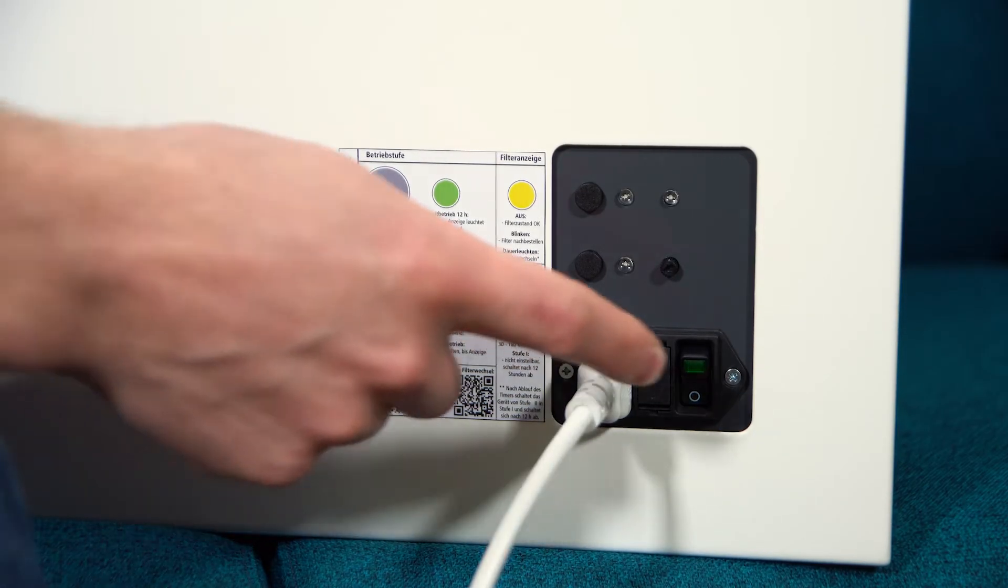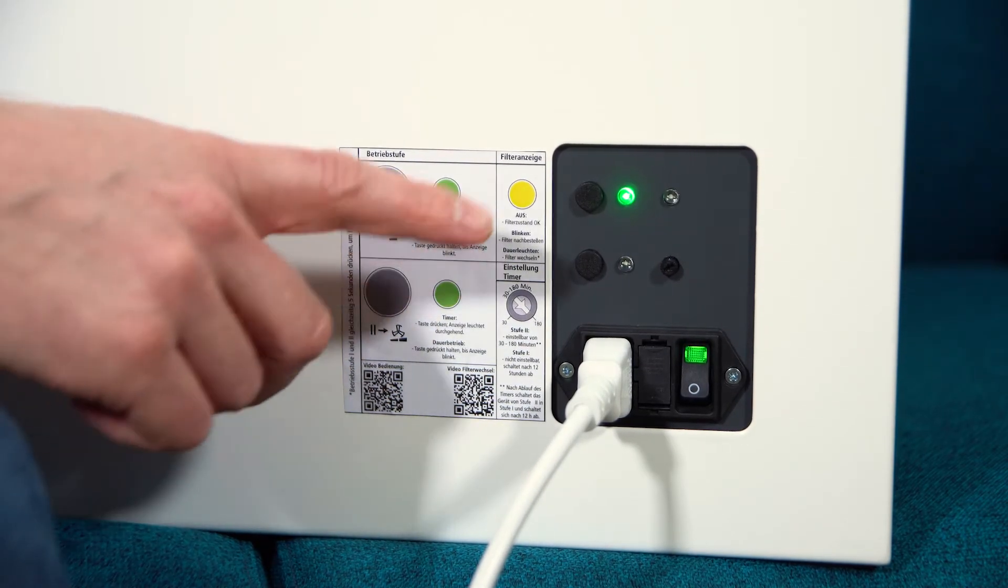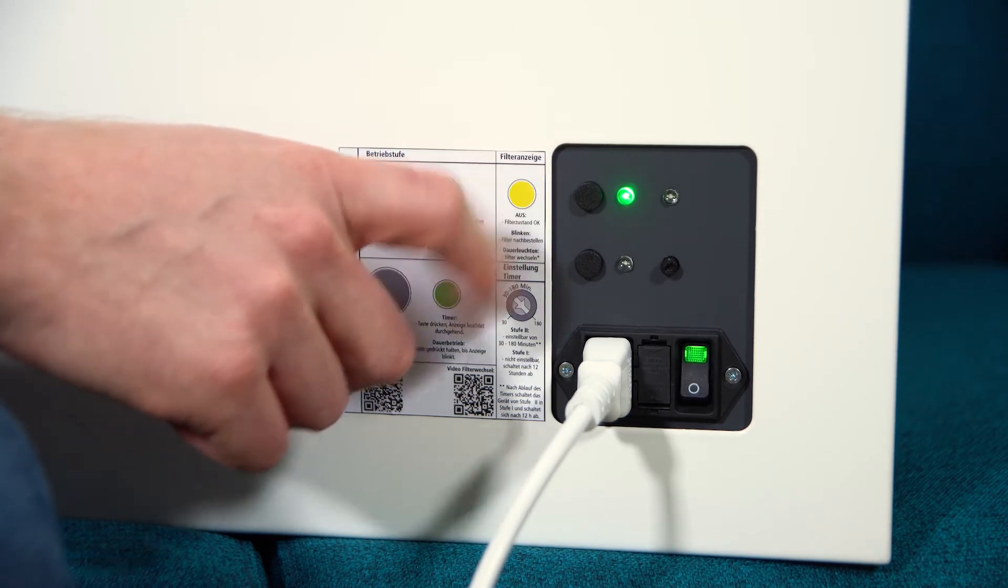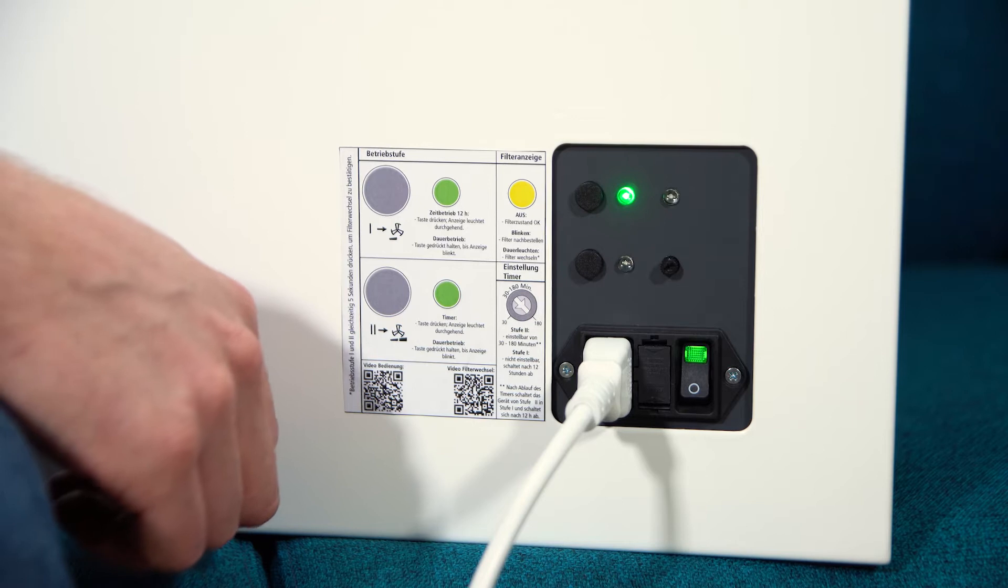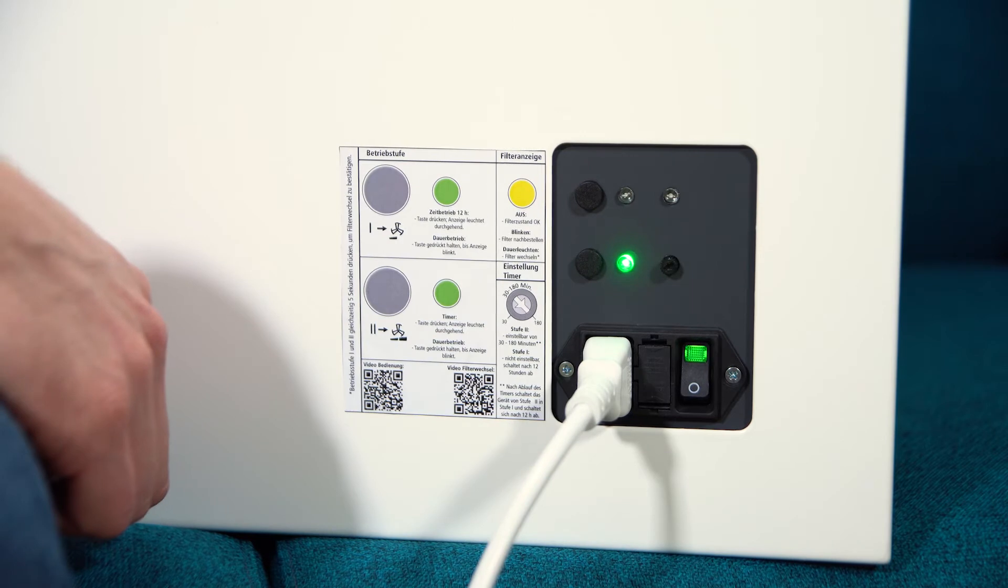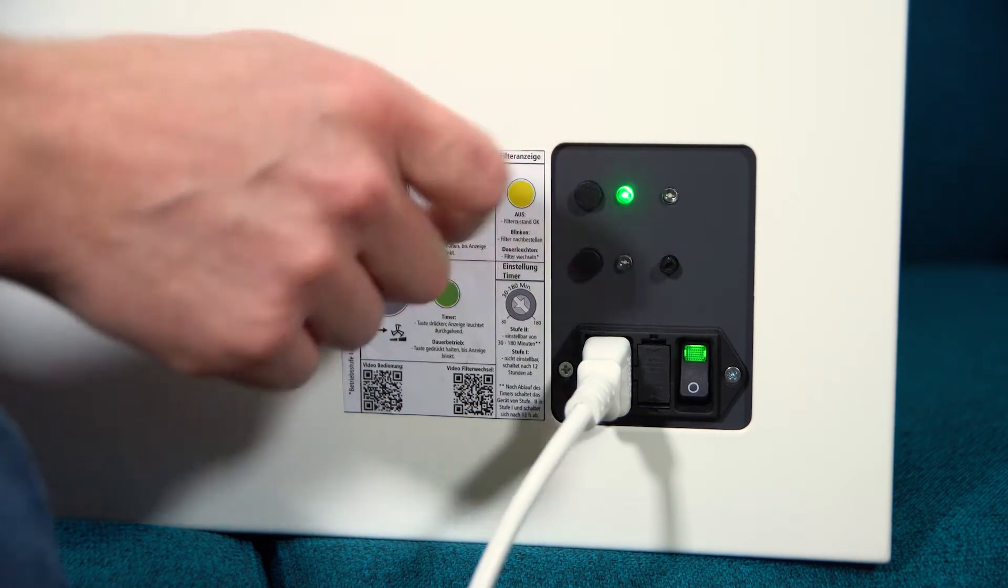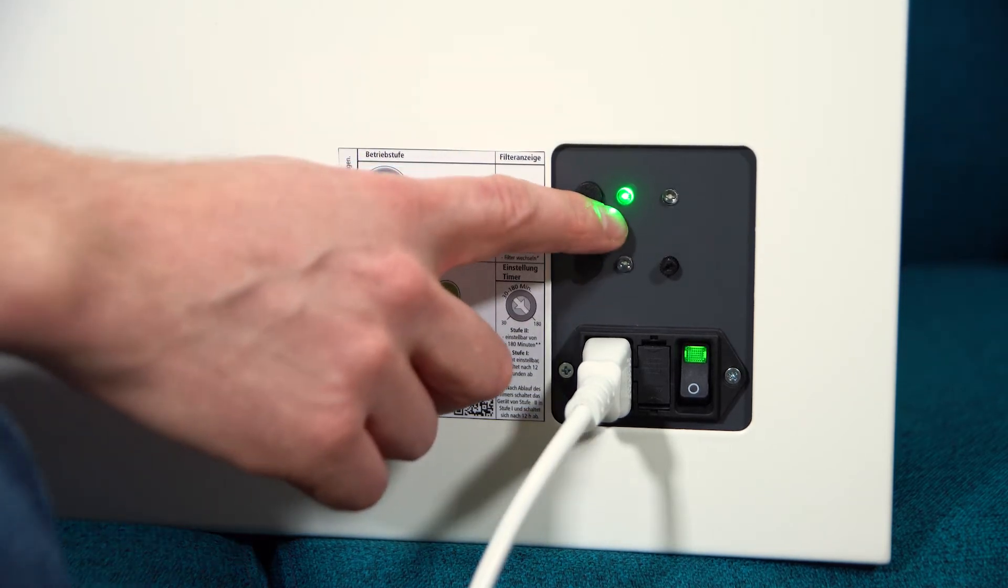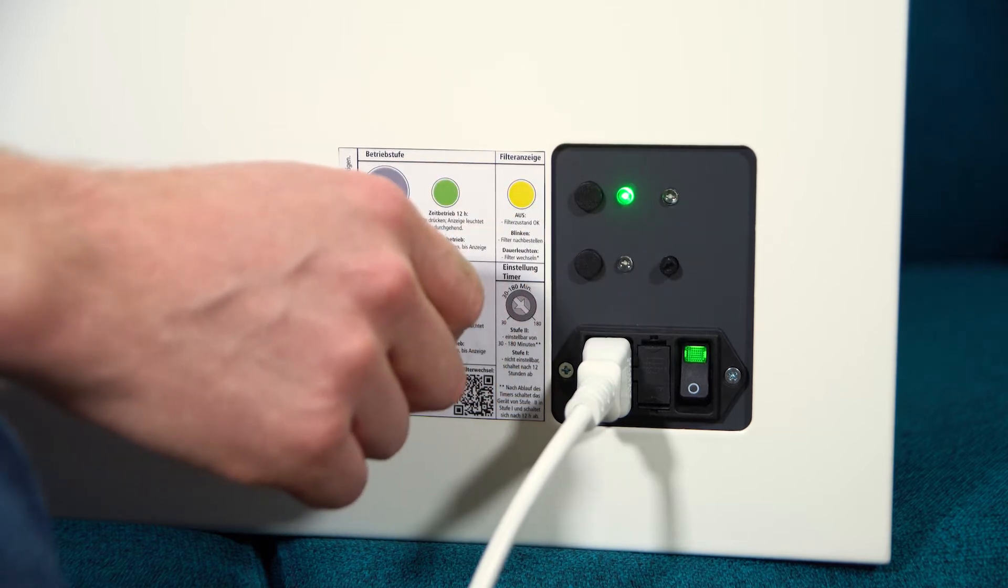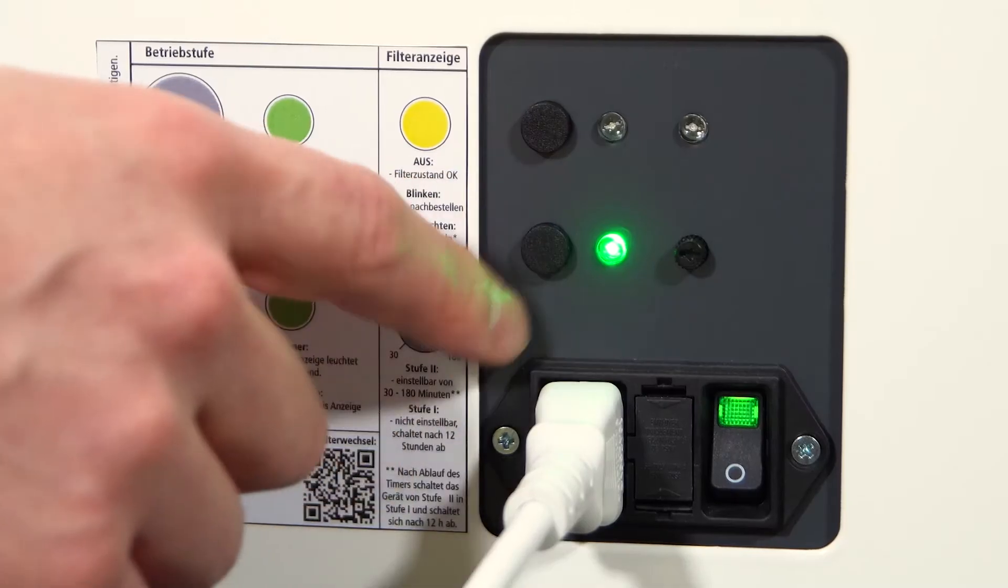To start the air purifier, switch on the main switch. The air purifier always starts at operating level 1 at fan speed 1. To change the operating level and increase the air volume flow, press button 2. To return to operating level 1, press button 1. The respective operating level is indicated by its continuously glowing green LED.